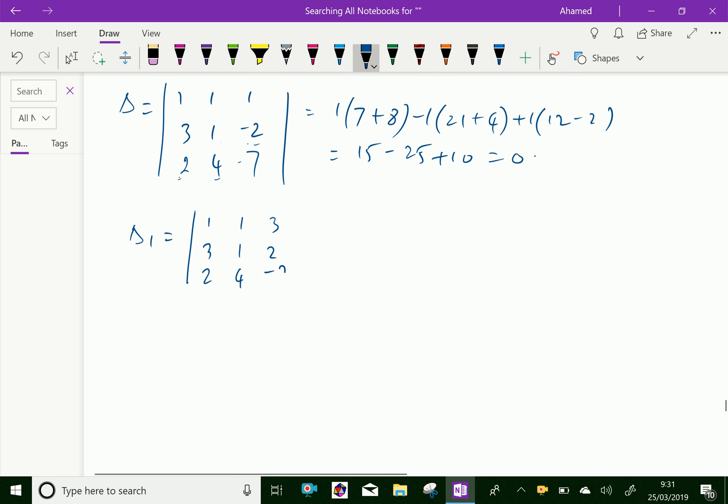3, 2, -7. You get 1 into 1 into -7, 1 into -7, 4 into 2 is 8, minus 8. Minus 1. 3 into -7 is -21, 2 into 2 is 4, minus 4. And 3 into 4 is 12, minus 2 into 1 is -2.